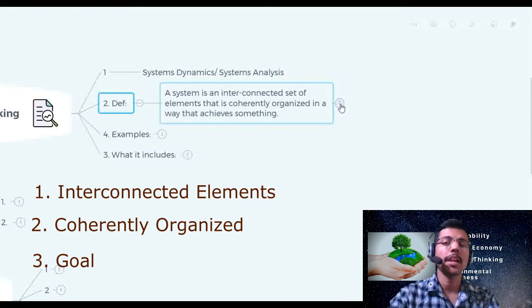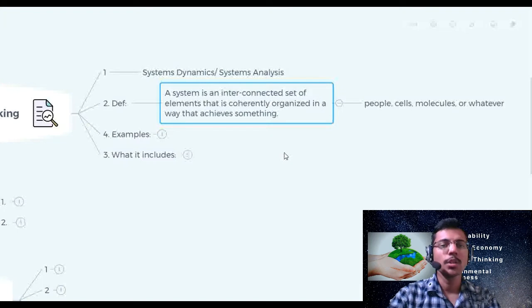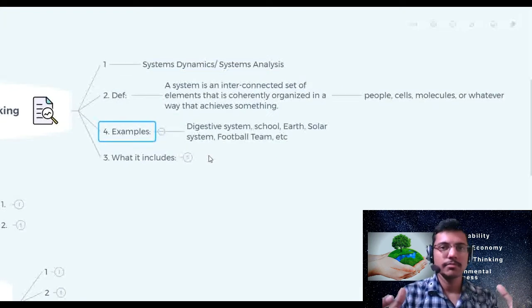We are surrounded by systems like the people, cells, molecules, or whatever we can see. So that is a system. So what are the examples? If we take a human body, our body is a system and it is made up of multiple subsystems as well.